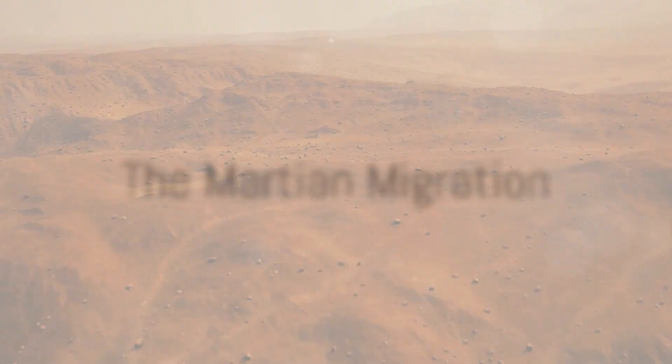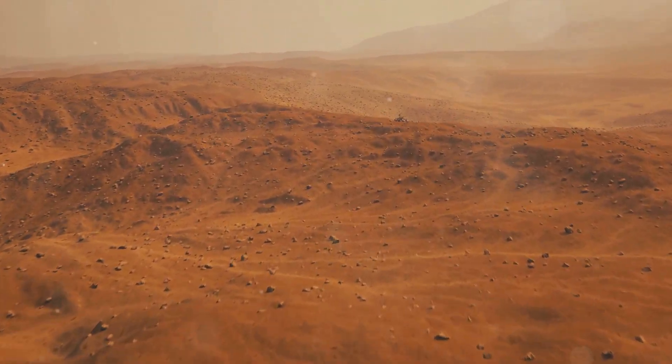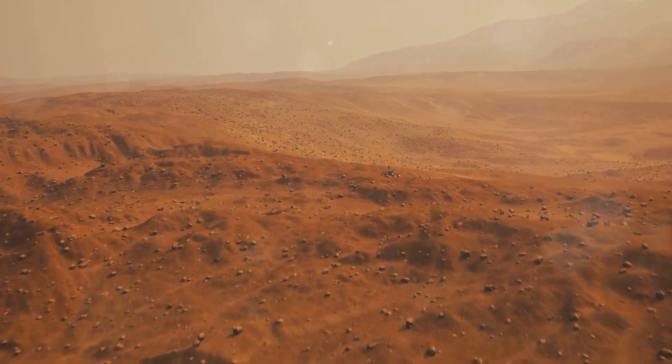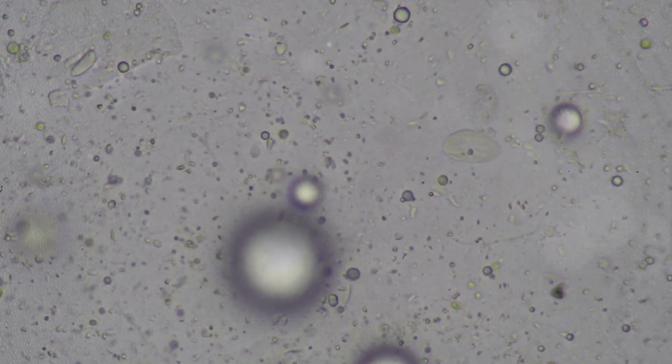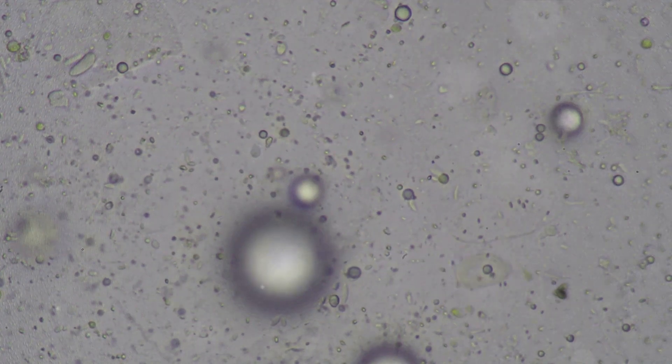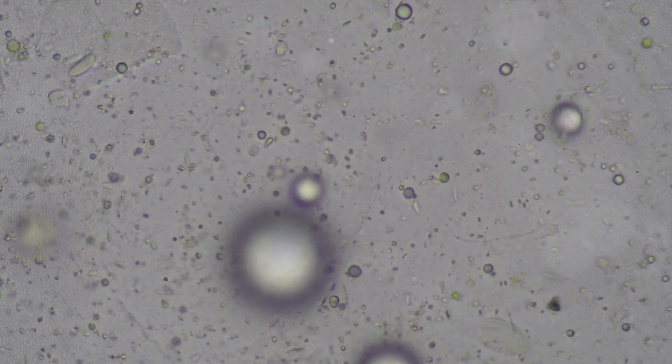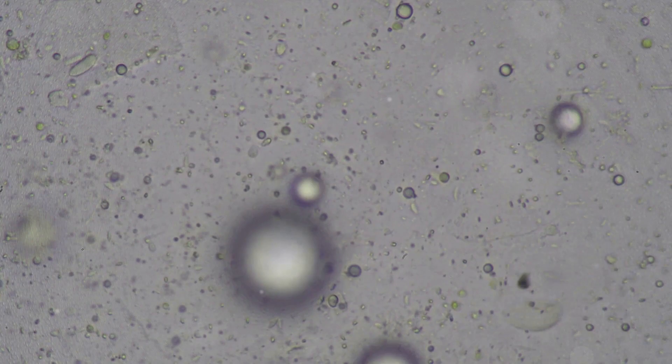As you delve deeper into this theory, consider this: What if Martians, foreseeing the inevitable demise of their planet, initiated an interplanetary migration to Earth? And what if these Martians were not little green men as often depicted in popular culture, but single-celled organisms like cyanobacteria?